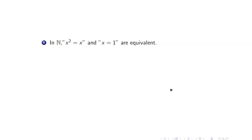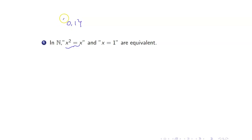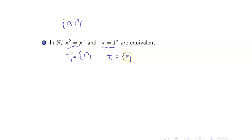For example, consider the two open sentences x² = x and x = 1. If we are in the set of natural numbers, these are equivalent. The truth set of x² = x gives x = 0 or x = 1. However, since 0 is not an element of the natural numbers, the truth set is just {1}, and the truth set of x = 1 is also {1}. So they are equivalent in ℕ.